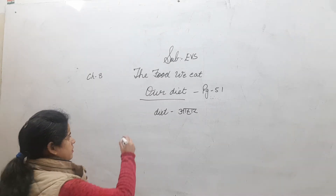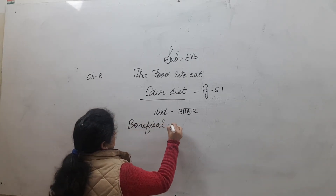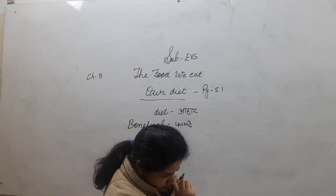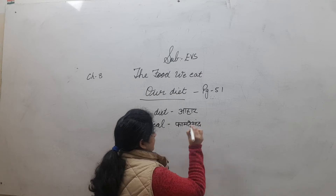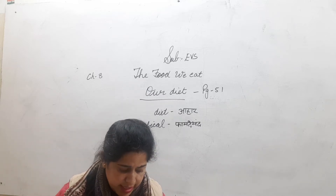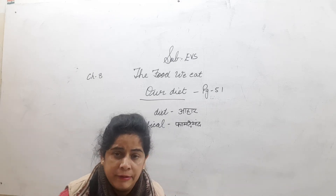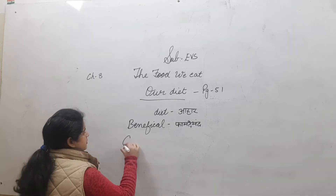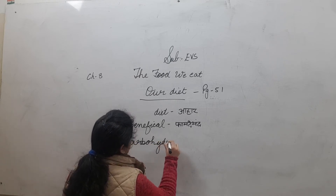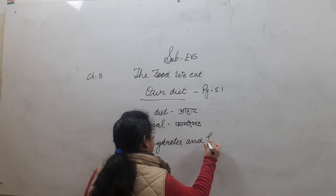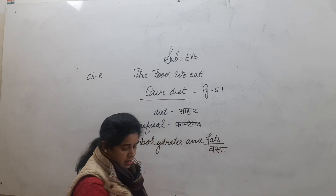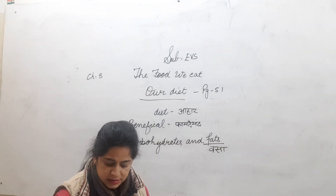We eat a variety of things every day. They are beneficial to us — beneficial means useful. Carbohydrates and fats are called energy-giving nutrients.